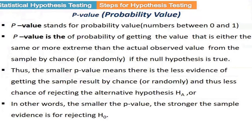As I told, we make our decision based on two things. One is the critical region, the other is the p-value. But nowadays, almost everywhere, researchers prefer to use the p-value. Let us understand what the p-value is.